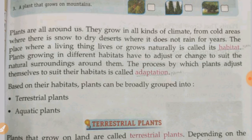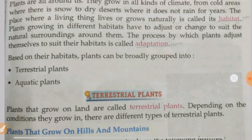Plants growing in different habitats have to adjust or change to the natural surroundings around them. The process by which plants adjust themselves to suit their habitats is called adaptation. Based on their habitats, plants can be broadly grouped into terrestrial plants and aquatic plants.